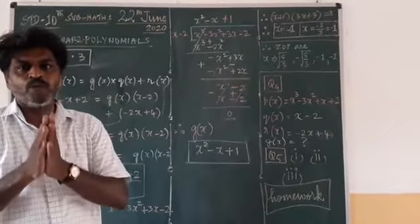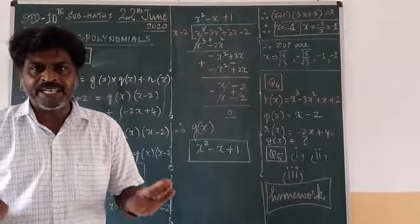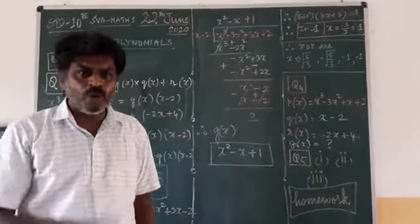Up to this one, 2.3 exercise is completed. Your polynomial chapter is also over.